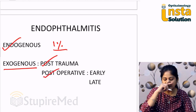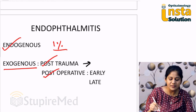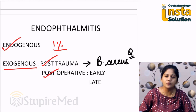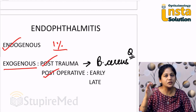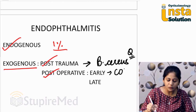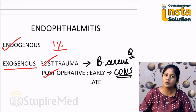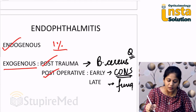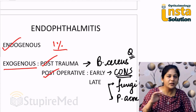In cases of trauma, the main causative organism is Bacillus cereus. Early post-operative endophthalmitis is caused by coagulase-negative Staphylococcus, also called Staph epidermidis. Late post-operative cases may be caused by either a fungal infection or Propionibacterium acnes.